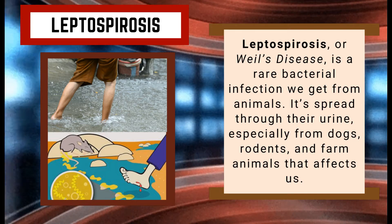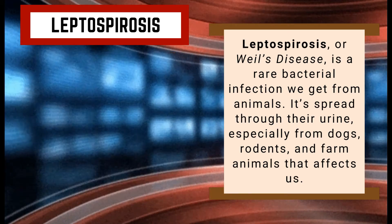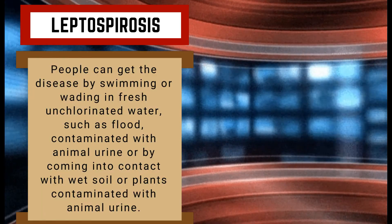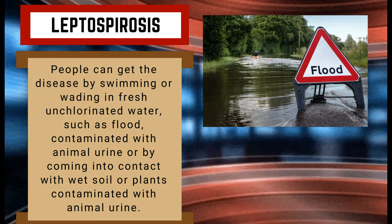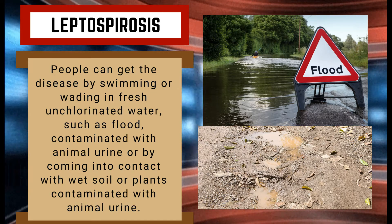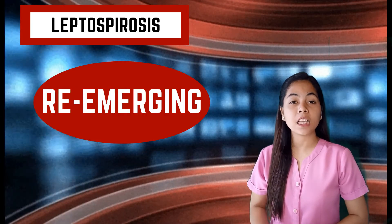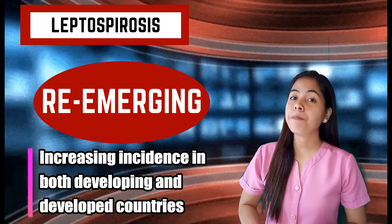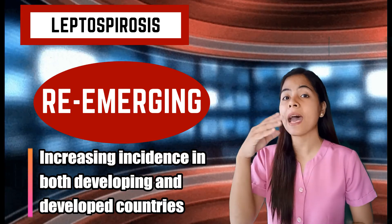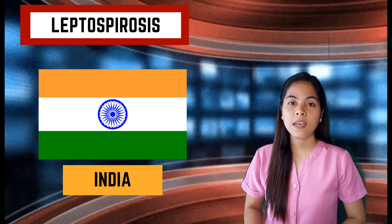Leptospirosis, also known as weil's disease, is a rare bacterial infection we get from animals. It is spread through their urine, especially from dogs, rodents, and farm animals. People can get the disease by swimming or wading in fresh, unchlorinated water such as flood water contaminated with animal urine, or by coming into contact with wet soil or plants contaminated with animal urine. It has been considered an emerging and now re-emerging global public health problem due to its increasing incidence in both developing and developed countries, with outbreaks in Nicaragua, Brazil, India, and the Philippines.